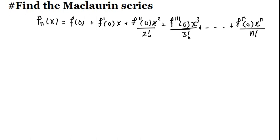Sometimes they tell you how many times you're supposed to differentiate — let's say up to the fifth or fourth derivative. Sometimes they don't. The best thing you can do is differentiate as many times as you can, but maybe just up to the fourth or fifth derivative. Don't overdo it, but don't stop at just two derivatives. Going up to the fourth at least should be a minimum.